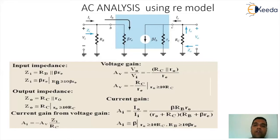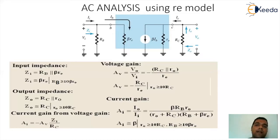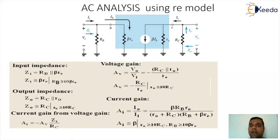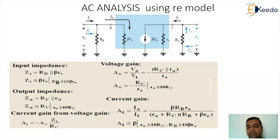For current gain calculation, we take the ratio of I0 by II. The actual device gain is beta, relating IC to IB. But for the network we relate I0 to II through a chain: I0 by IC, IC by IB, and IB by II. IC by IB gives beta, and the remaining factors are realized using the current divider rule. Overall we land up at: AI = beta·RB·RO divided by (RO plus RC) times (RB plus beta·RE). AI can also be expressed as minus of AV times ZI divided by RC.